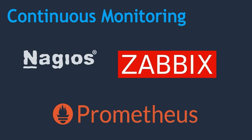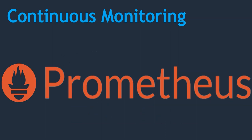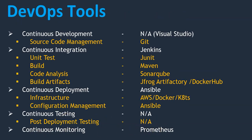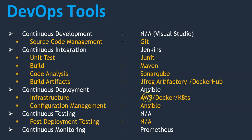Under continuous monitoring, we have tools like Nagios, Zabbix, and Prometheus. Among these, we are going to choose Prometheus. So the complete list of tools we are covering: source code management — Git; continuous integration — Jenkins; unit test — JUnit; build tool — Maven; code analysis — SonarQube; build artifacts — JFrog Artifactory and Docker Hub; continuous deployment — Ansible; infrastructure — AWS, Docker, and Kubernetes (in AWS we just deal with EC2 service); configuration management — Ansible; continuous testing — not covered; continuous monitoring — Prometheus.